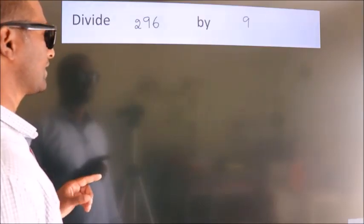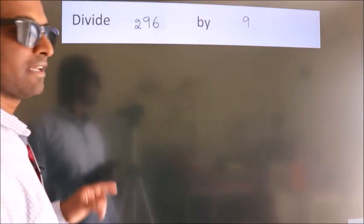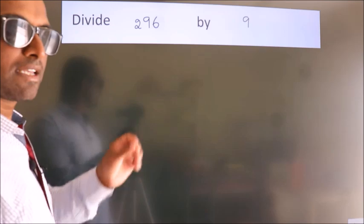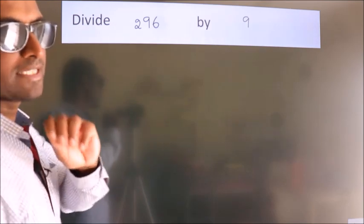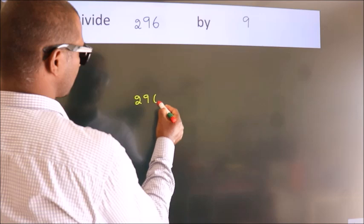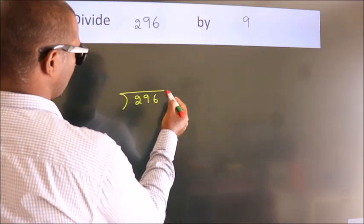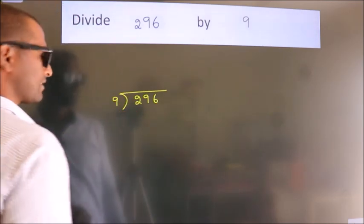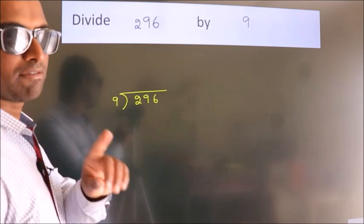Divide 296 by 9. To do this division, we should frame it in this way. 296 here, 9 here. This is your step 1.